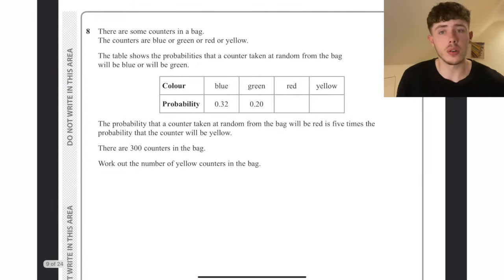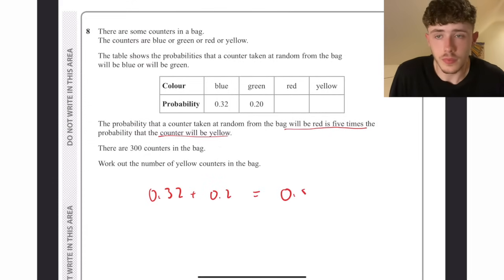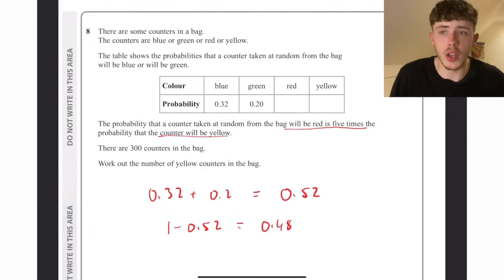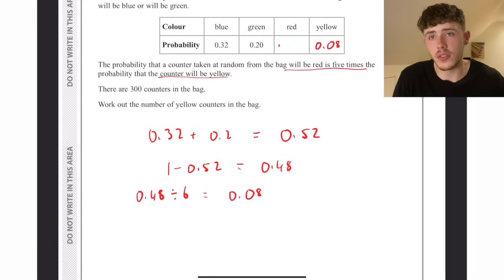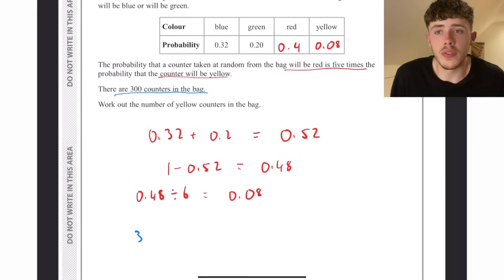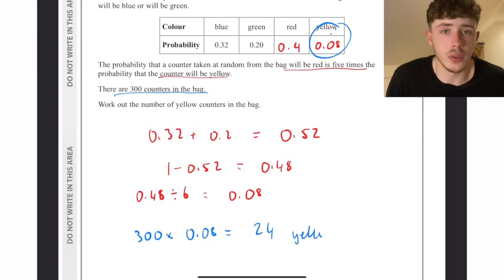Classic probability one. If you haven't got confident with these, I highly recommend doing this. In a probability table, all probabilities should add up to one. So 0.32 add 0.2 is 0.52, take this away from one and we get 0.48. Because the probability of getting red is 5 times the probability of getting yellow, we share the 0.48 in the ratio 5 to 1. Divide it by 6, one part towards yellow which is 0.08, and the rest towards red which is 0.4. If there are 300 counters in the bag, the number of yellow counters is 8% of 300. So we find 8% and get 24 yellow counters.